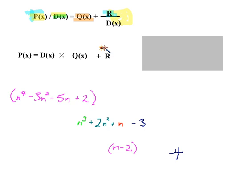The P equals D times Q plus R, or polynomial dividend in terms of X, is equal to the divisor in terms of X times the quotient in terms of X plus the remainder, not divided by the divisor in this case. And why is that?